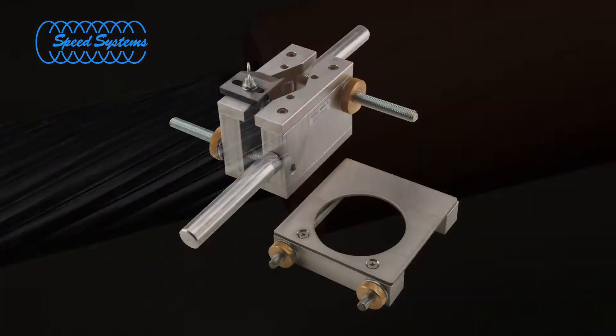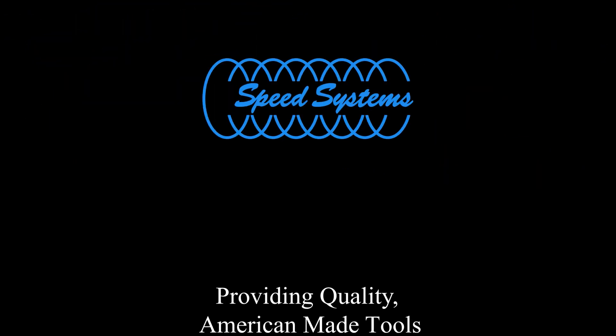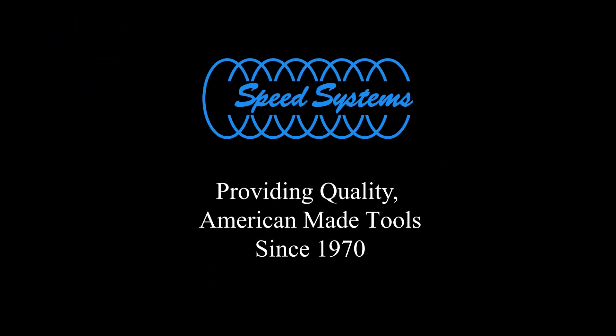This concludes the steps for preparing underground primary cable for termination using the Mark Series Stripper. Speed Systems, providing quality American-made tools since 1970.